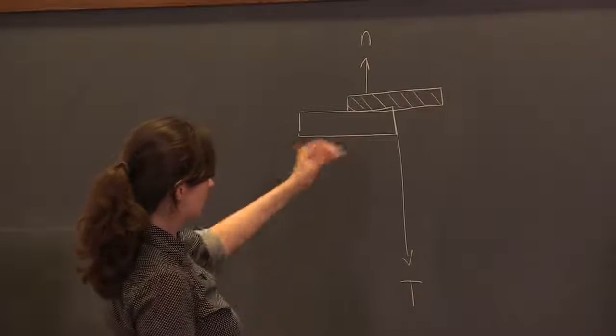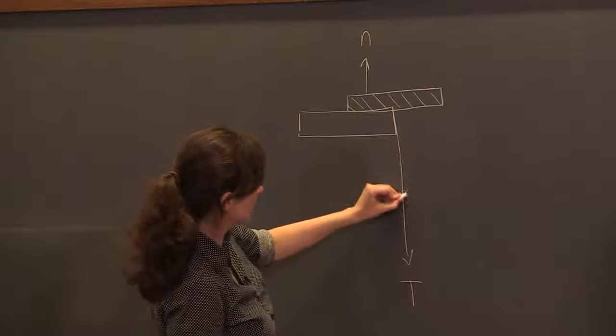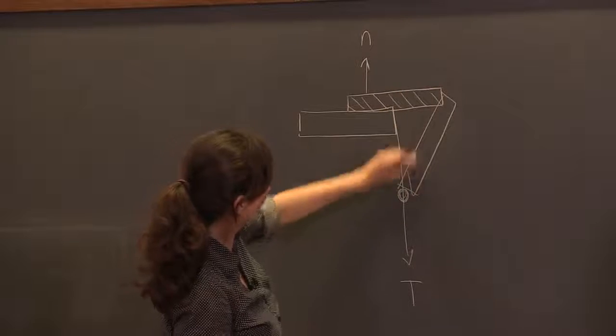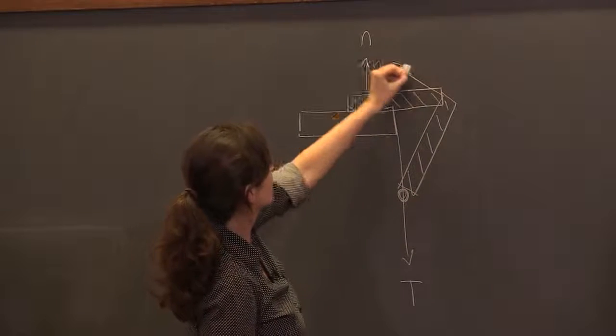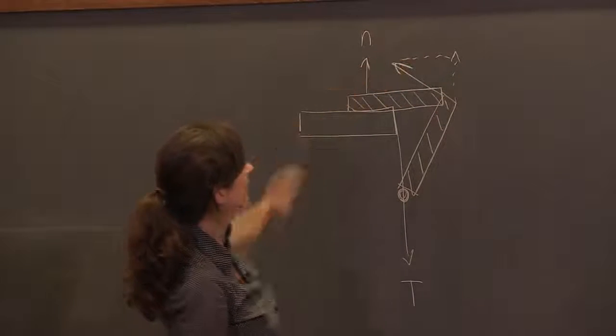And then if we add in our additional matchstick, so this is a side view. So this is matchstick number two and number three, there is now a normal force this way. It's got components like this and like that.